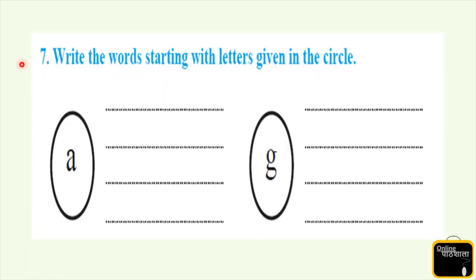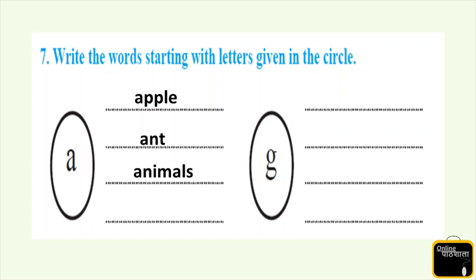Question number 7: write the words starting with the letters given in the circle. Now we are going to make some words which start with the letter A. Repeat after me: apple, ant, animals, act. And the next letter is G: green, game, get, go.